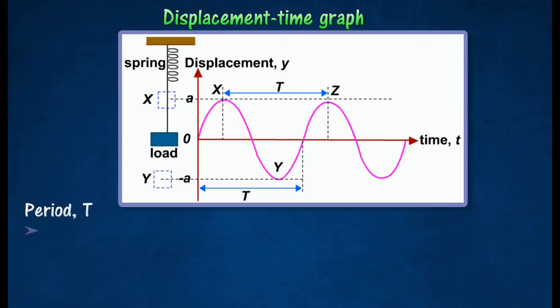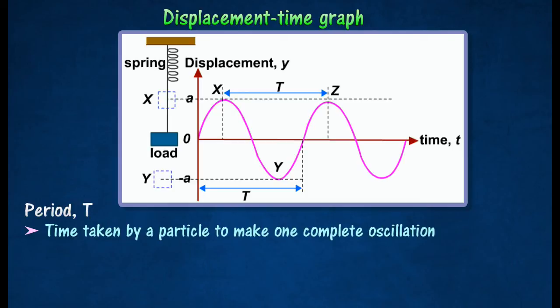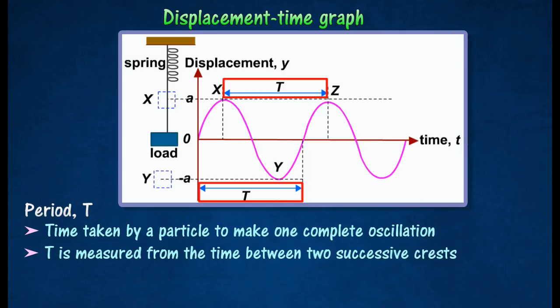Period T is the time taken by a particle to make one complete oscillation. Normally, the period T is measured from the time between two successive crests or two successive troughs. The following is the relationship between T and F.